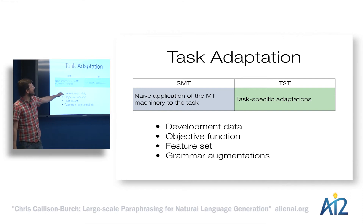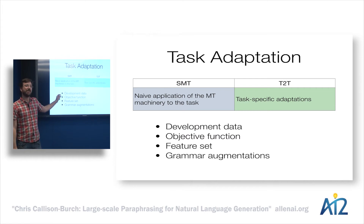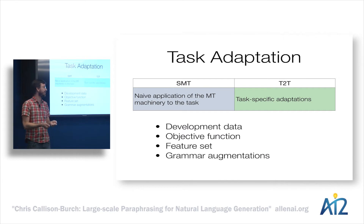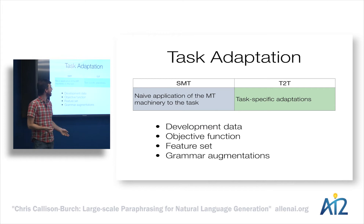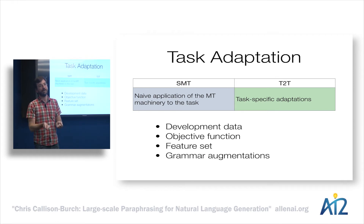Instead of a naive application, we're going to do task-specific adaptations of: the development data we normally use in statistical MT, the objective function that guides our model to figure out what's actually good, the set of features that underlie the model, and something that doesn't normally happen in statistical MT — we can actually inject specific rules that we know a priori happen in a particular type of transformation.